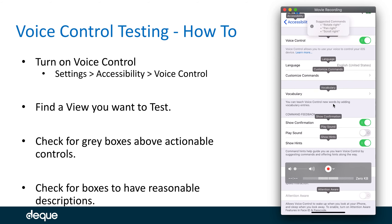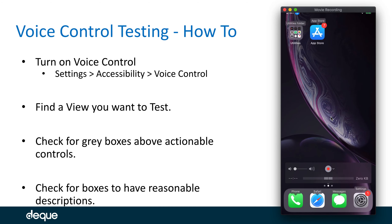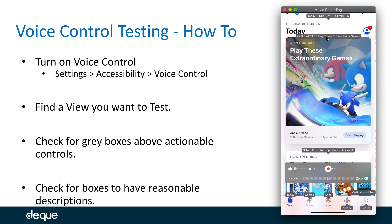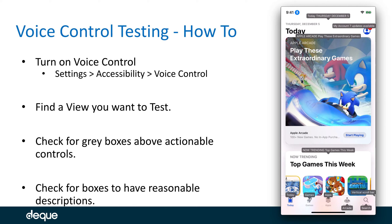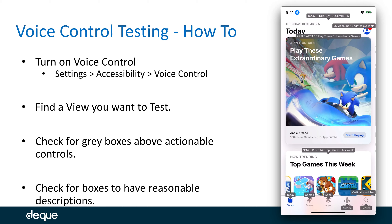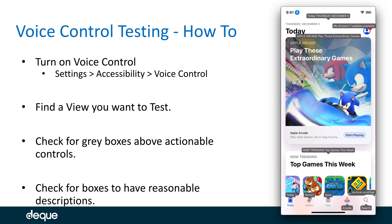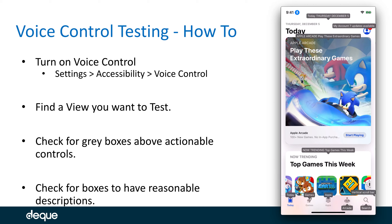Now that voice control is on, we get this nice gray overlay. I'll navigate to the view I want to test — I like testing the App Store since there's a lot going on. Basically, all we are looking for is that there are gray boxes over all of our actionable controls. Just the presence of these gray boxes tells me a ton about the accessibility of my application. In one second, I can tell all my actionable controls are going to be accessible in voice control and switch control, and by looking at the text on those controls, I can see they'll be accessible in VoiceOver with reasonable descriptions.